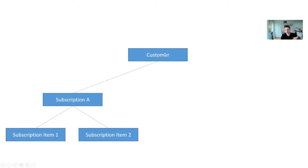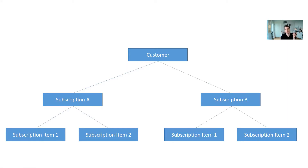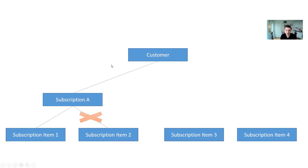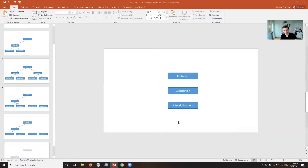So a customer can have a subscription, each subscription can be put together from different products or services, and each customer can have multiple subscriptions at the same time. The use case today is: you have one customer with a subscription, you want to delete a product or subscription item from it, and then add another item to the subscription.